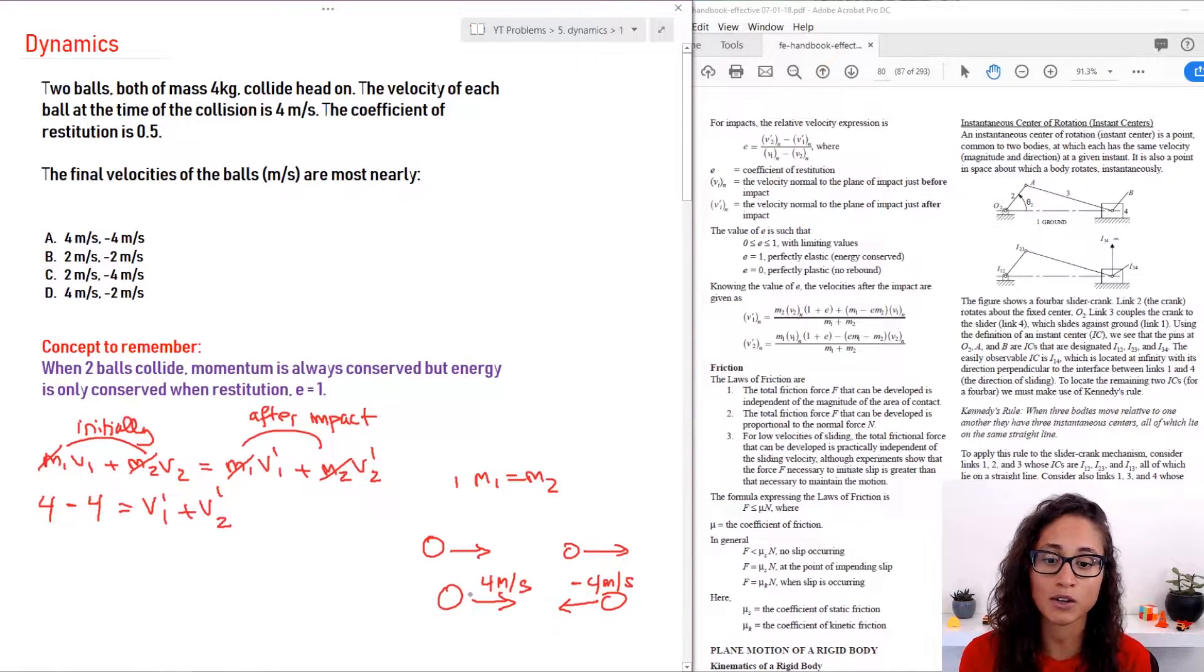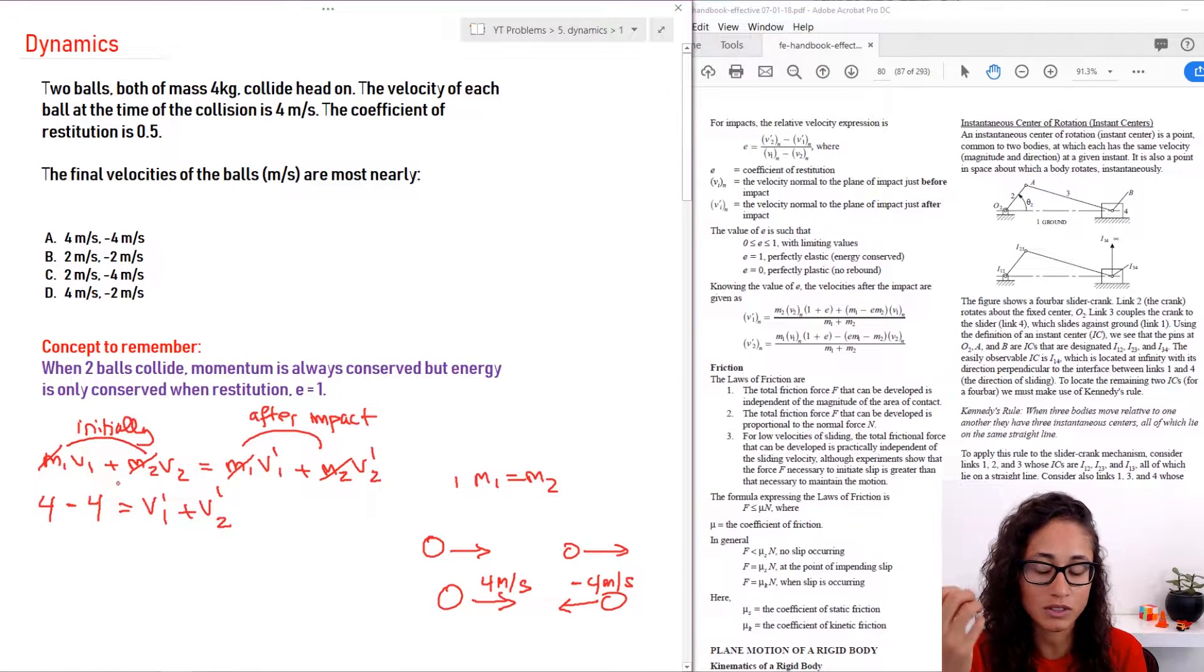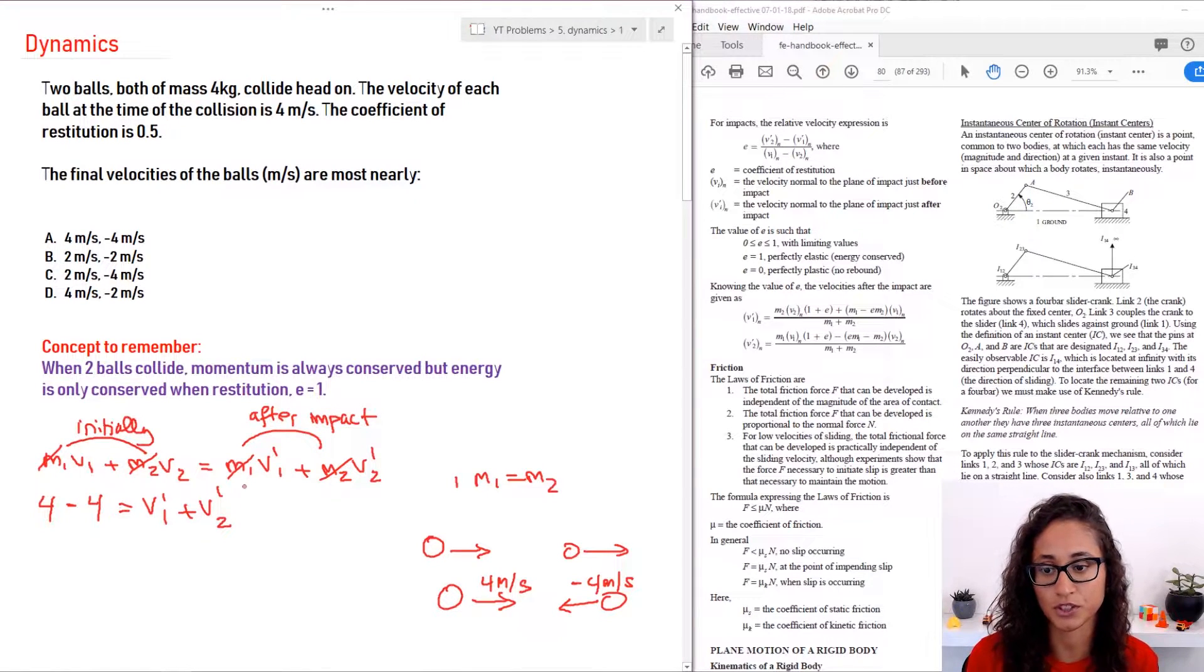But they have to be opposite of each other for that collision to happen. So now let's substitute these numbers. V1 is going to be four, V2 is going to be minus four, and then we have V1 prime plus V2 prime. Now note, it doesn't matter which one you pick. I could have still picked V2 to be the positive number and V1 to be the negative velocity. The only problem is that whatever you pick, just make sure you use that same sign convention when you use the restitution equation.